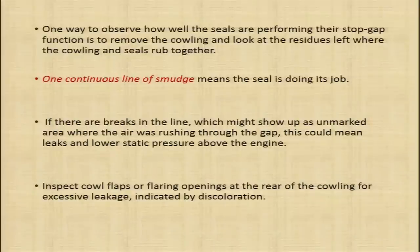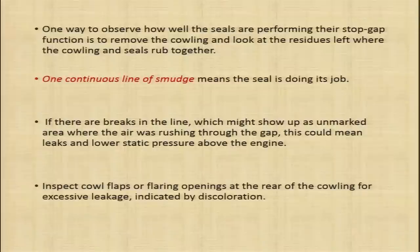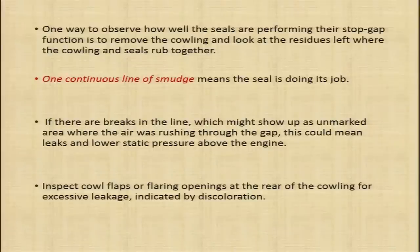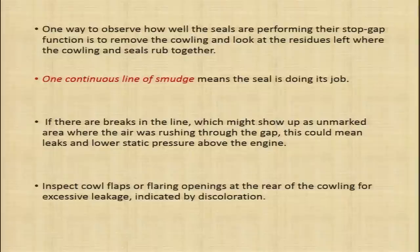One continuous line of smudge means the seal is doing its job. If there are breaks in the line — unmarked areas where the air was rushing through the gap — this could indicate leaks and lower static pressure above the engine. Cowl flaps or flaring openings at the rear of the cowling should also be inspected for excessive leakage, indicated by discoloration.